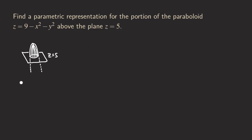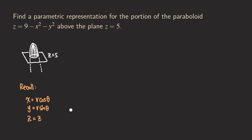Let's review cylindrical coordinates. We have x equals r cosine θ, and y equals r sine θ, because the projection on the xy-plane is circular. That's why we let x be r cosine and y be r sine. And z will simply just be z.